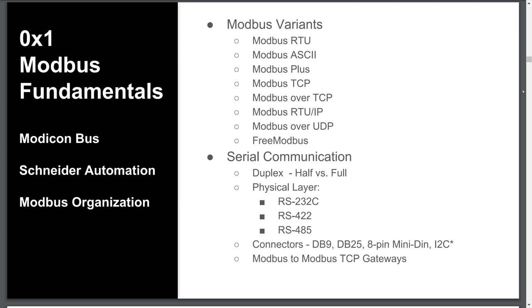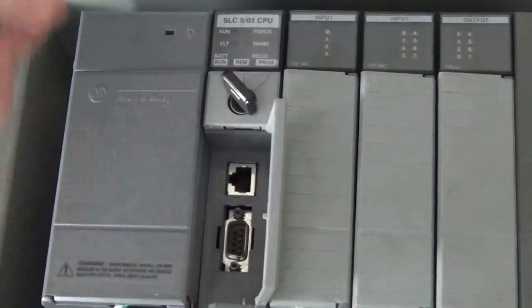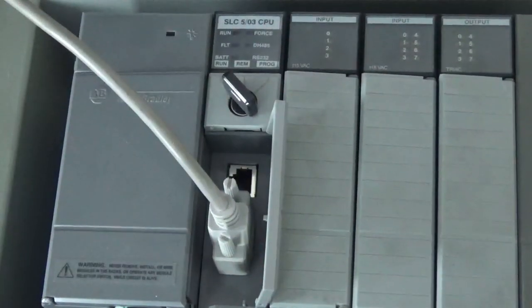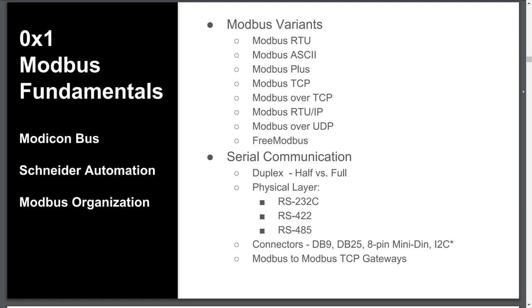The RS-232 standard was first introduced by the Electronic Industries Association, or EIA, in 1969. Be aware that you may hear RS-232, EIA-232, and even TIA-232 being used interchangeably. If you're bald like me, you probably grew up with one of these RS-232 cables — they have a 9-pin DB9 connector on each end. The D-shaped connector was first ratified by the EIA in the RS-232C revision. They're useful for connecting older PLCs, and some PLCs you'll encounter, like the Slick 503, still use this type of connector. RS-232 supports point-to-point communication, meaning we're connecting two devices to each other, one on each end.